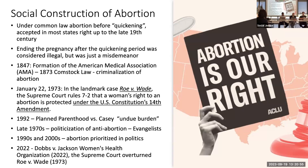In 1973, you have the landmark Roe versus Wade Supreme Court decision that women's right to abortion is protected under the US Constitution's 14th Amendment. In 1992, you have Planned Parenthood versus Casey, which starts to put certain restrictions on Roe and introduces the undue burden standard — under which abortion restrictions would be unconstitutional when enacted for the purpose of placing a substantial obstacle in the path of a woman seeking an abortion.